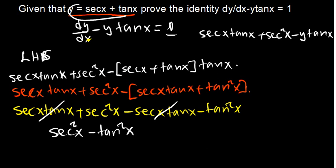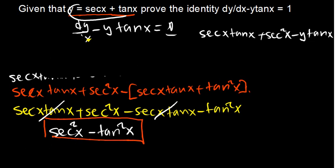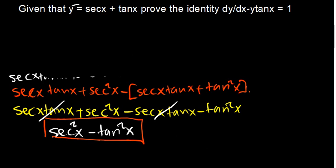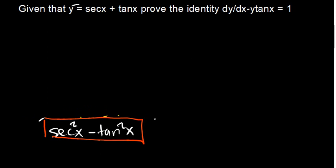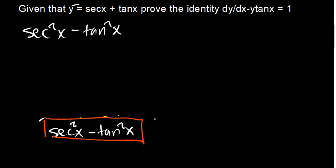This is an identity — sec squared x minus tan squared x gives us 1. If you know this identity you can stop here, but if you're not sure, you can continue from there and show it explicitly using white color: we have sec squared x minus tan squared x.